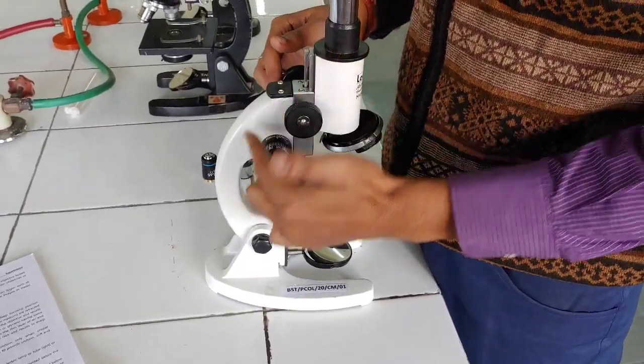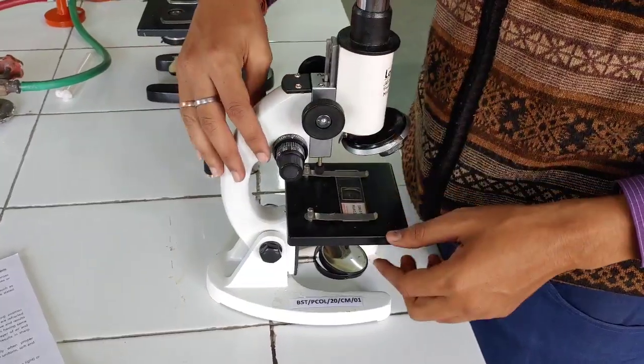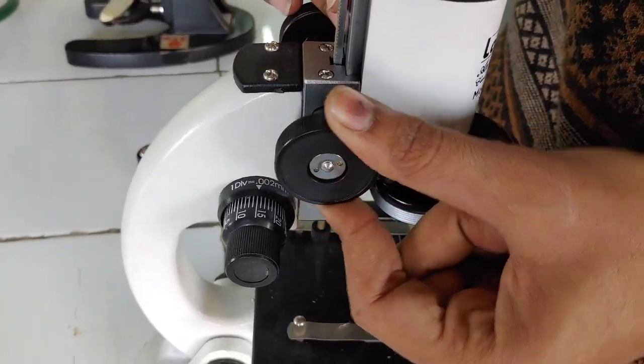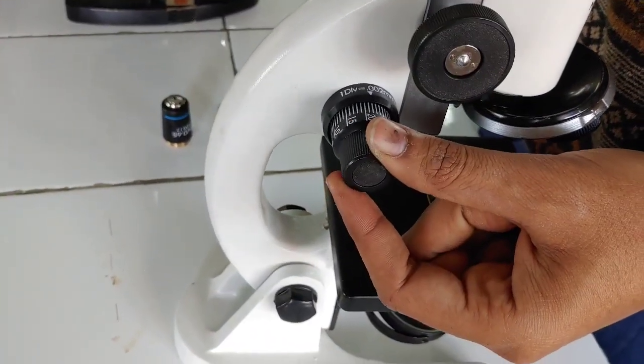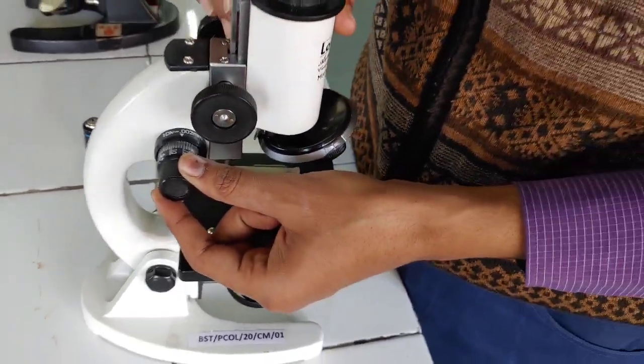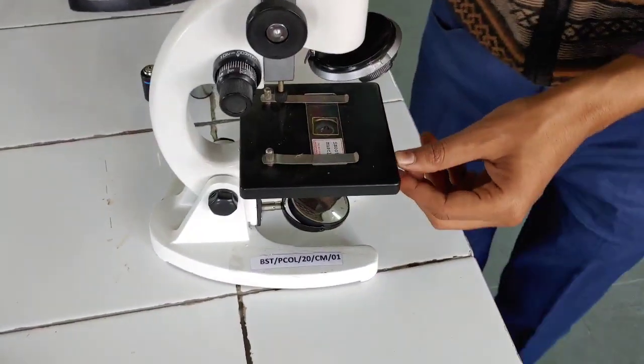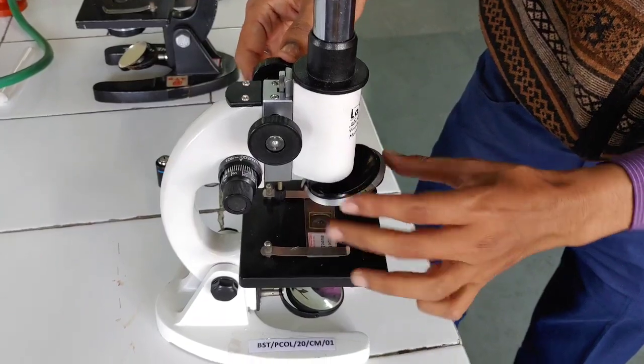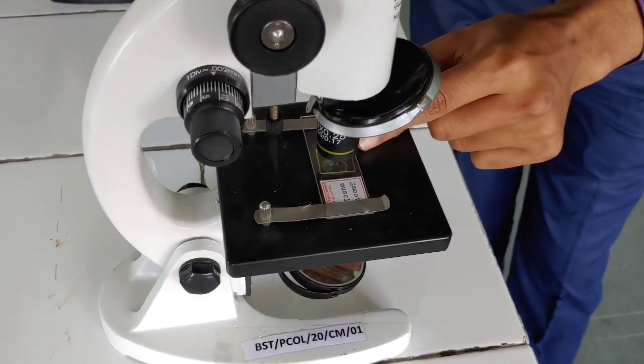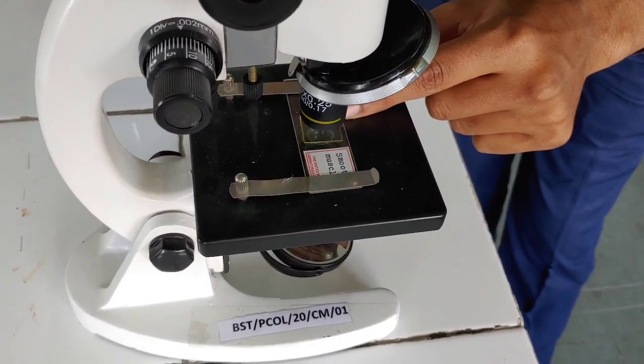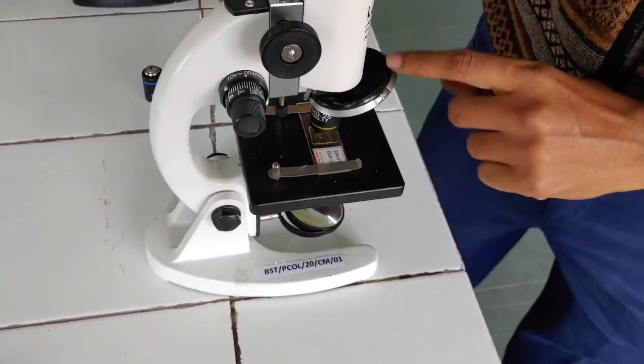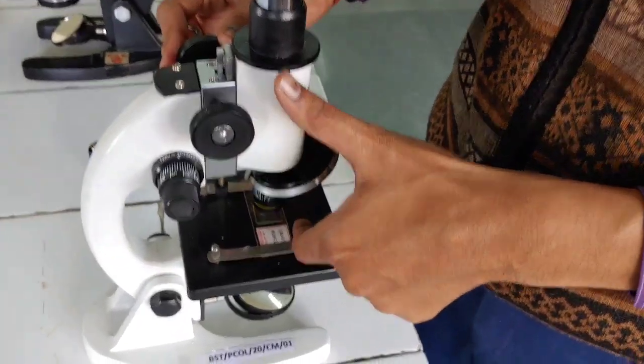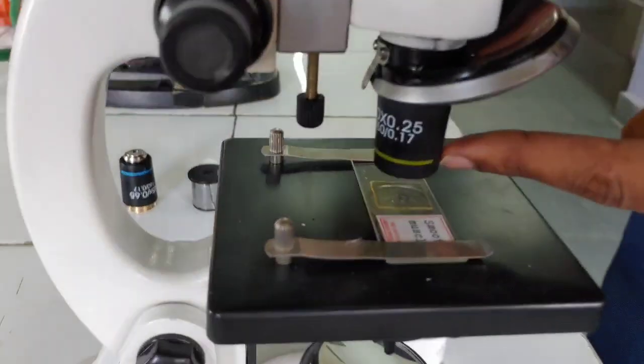Now, the last component is the adjusting system. There are two adjusting systems. First is coarse adjustment knob and next one is the fine adjustment knob. If you move the coarse adjustment knob, you can see in the video that you can focus more clearly on the slide or on your specimen. What is the function of coarse adjustment knob? It is used to bring the specimen into appropriate near focus.